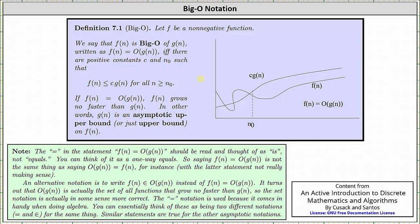If we let f be a non-negative function, we say f(n) is Big-O of g(n), written as f(n) equals Big-O of g(n), if and only if there are positive constants c and n₀ such that f(n) is less than or equal to c times g(n) for all n greater than or equal to n₀.